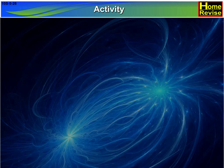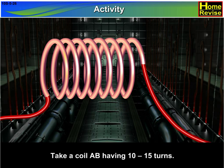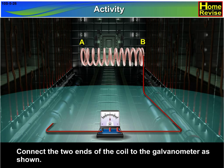Activity. Take a coil AB having 10 to 15 turns. Connect the two ends of the coil to the galvanometer as shown.